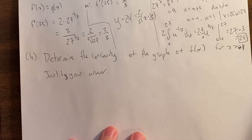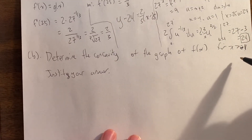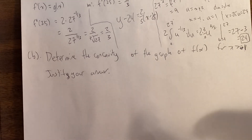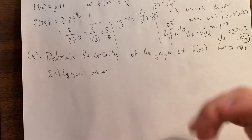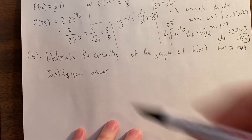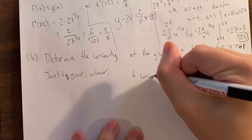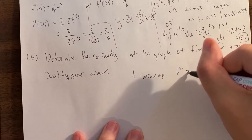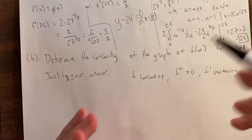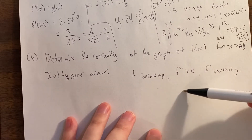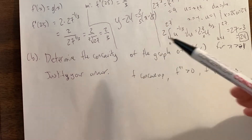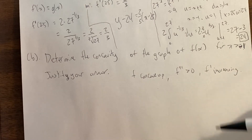My next question is: determine the concavity of the graph of f(x) for x greater than -1, and justify your answer. Remember there are two rules for concavity used throughout any calculus exam. The first one: f is concave up when f double prime is positive. The second: f is concave up when f prime is increasing. Similarly, f is concave down when f double prime is negative, or when f prime is decreasing. The question is: should you use f double prime being positive, or f prime increasing?